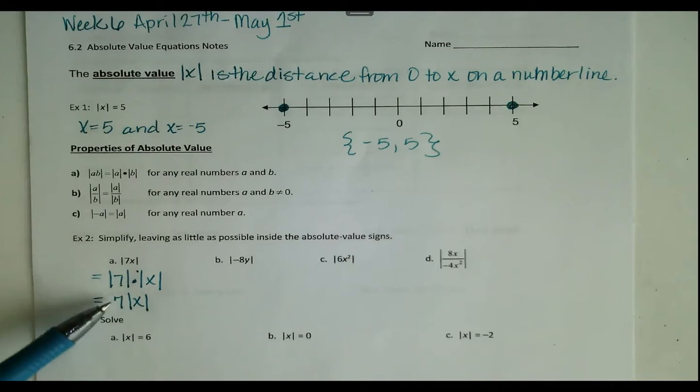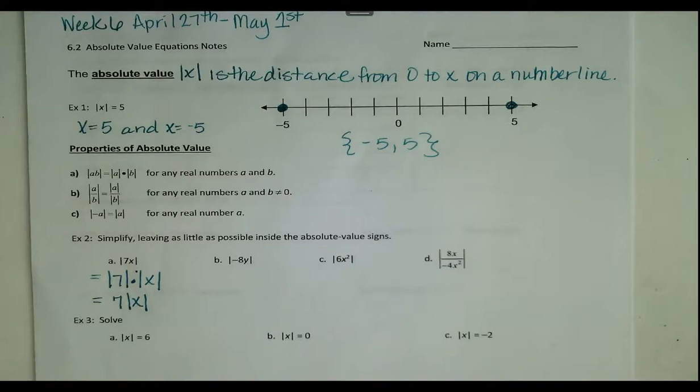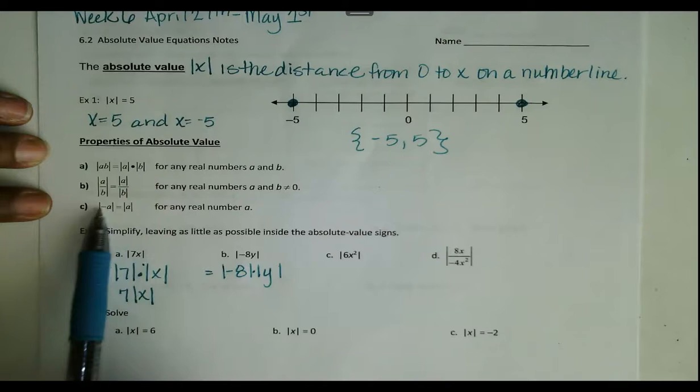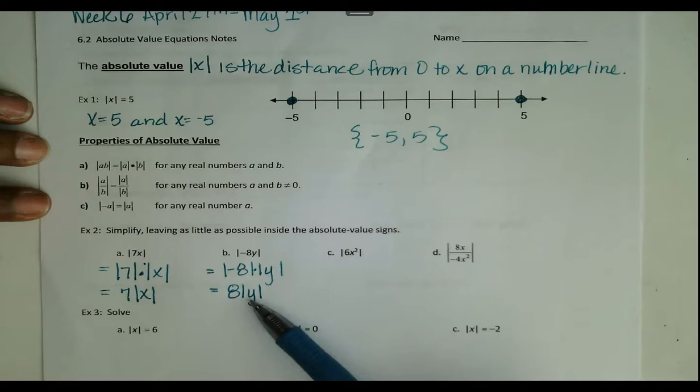Next example: this time we have negative 8y inside the absolute value. We separate it into two parts: the absolute value of negative 8 times the absolute value of y. The absolute value of negative 8 is positive 8 — that's this property. Again, we cannot take the absolute value of y because we don't know if it's negative or positive, so we leave it in the absolute value bar. Our answer is 8 times the absolute value of y.